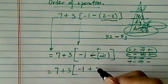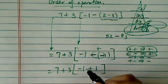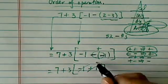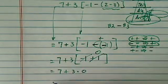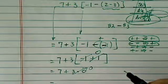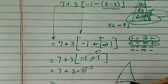So minus 1 plus 1. You owe 1, you earn 1, that's a 0. So I have 7 plus 3 times 0. And that's 0 because order of operation says,